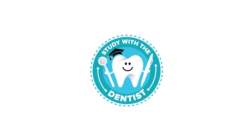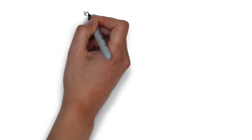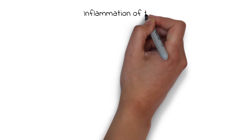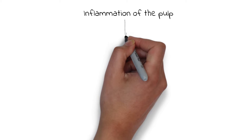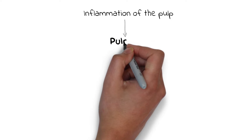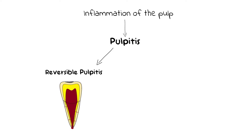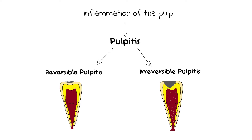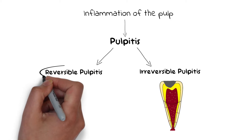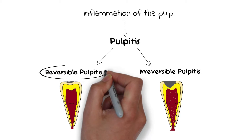Hello and welcome back everyone. We already know that the inflammation of the pulp is known as pulpitis. There are two types of pulpitis: reversible pulpitis and irreversible pulpitis. Today we will be discussing the reversible pulpitis.